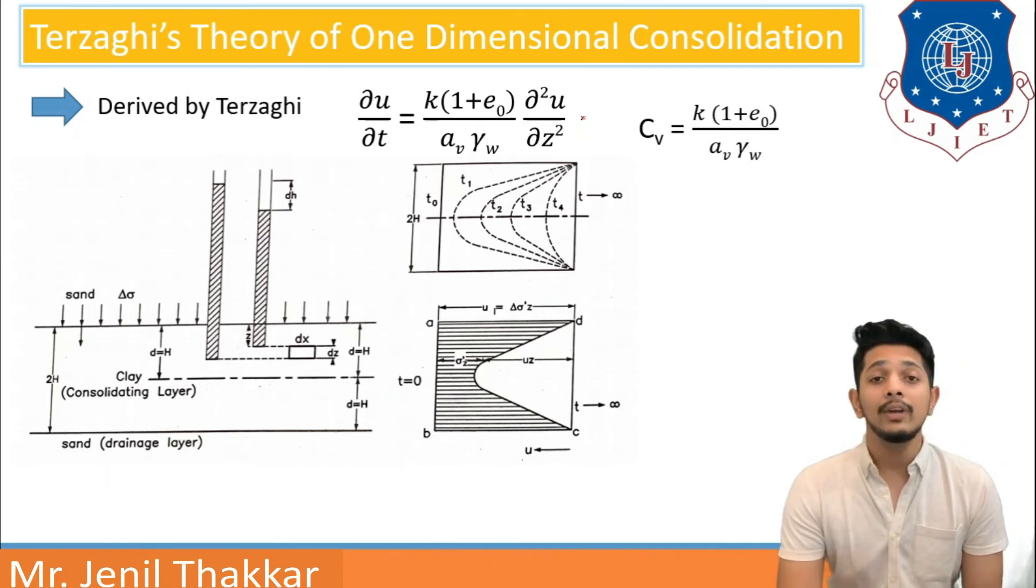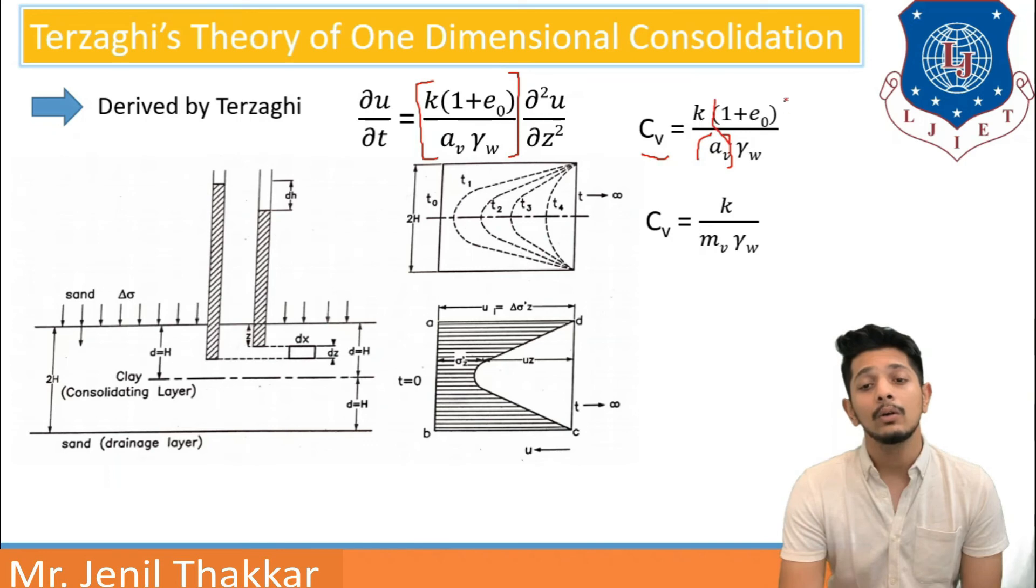Here, further, if we analyze it and we assume this section as cv, cv is defined as coefficient of consolidation, denoted by c subscript v, equals k into 1 plus e0 upon av into gamma w. Here, we know that av upon 1 plus e0 is mv, so we can write mv there.